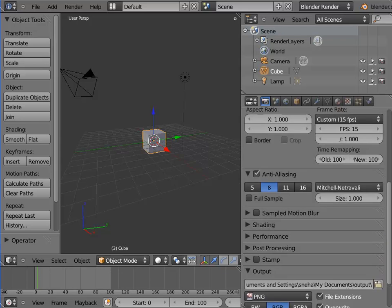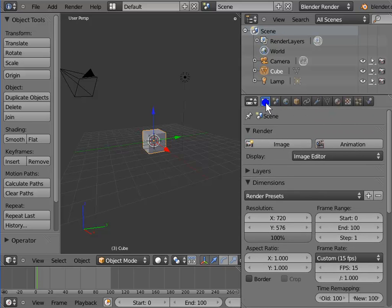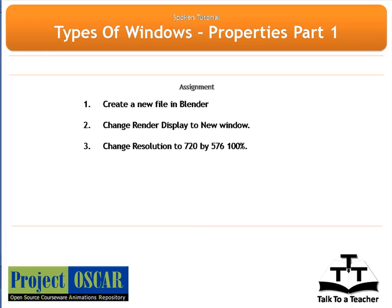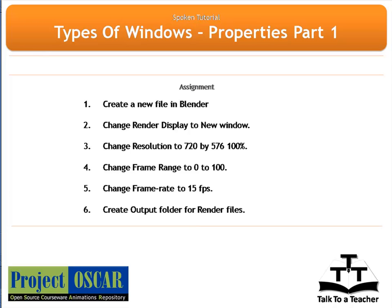So that was about the render panel. In this tutorial we have covered the render panel under the Properties window. The rest of the panels shall be covered in the next tutorial. Now go ahead and create a new blend file: change the render display to New Window, change resolution to 720 by 576 at 100%, change frame range to 0 to 100, change frame rate to 15 fps, and create an output folder for the render files.